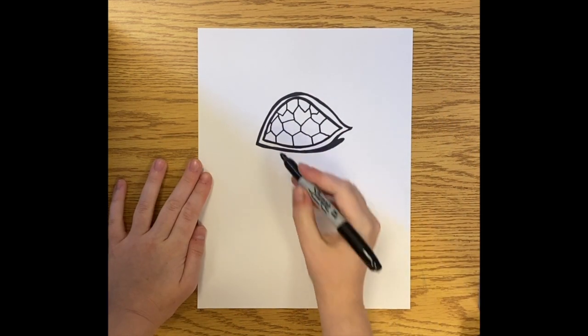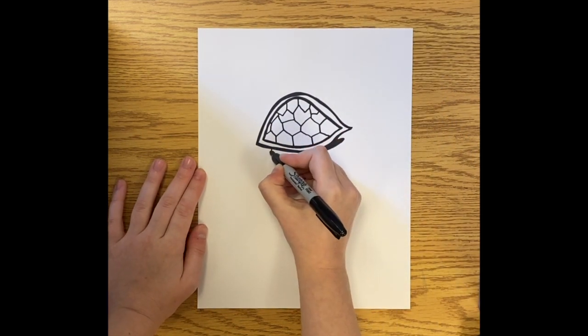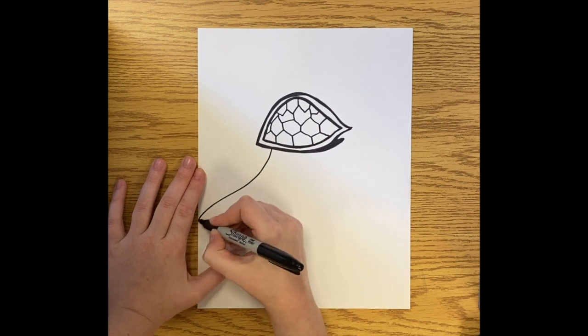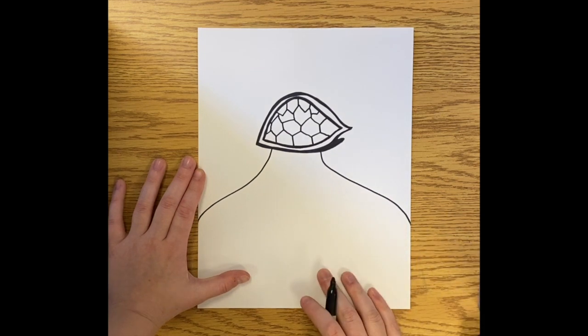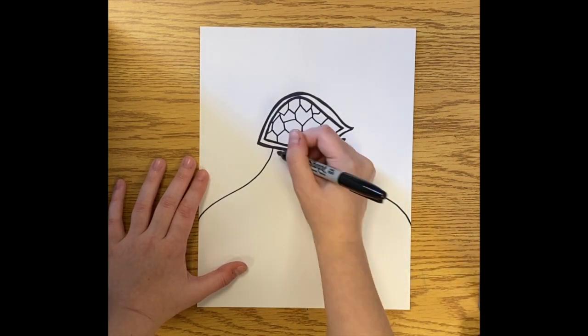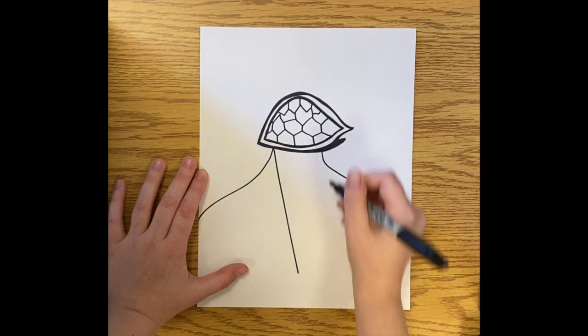After you finish drawing the item that's going to be covering your face, I'm going to start to draw the body of the portrait. So I'm making kind of curved lines for my neck and then out and around for my shoulders.